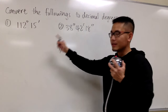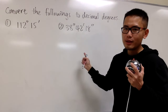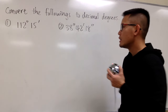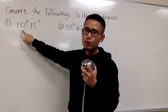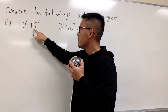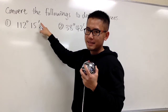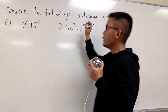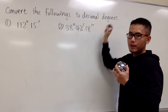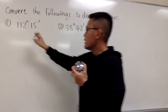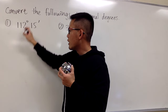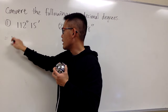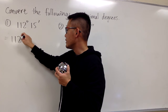We are going to convert these two angles into decimal degrees. For the first one, we have 112 degrees and 15 minutes. We want to end up with degrees at the end. This is 112 degrees already, so this is good — we'll just write this down as 112 degrees.